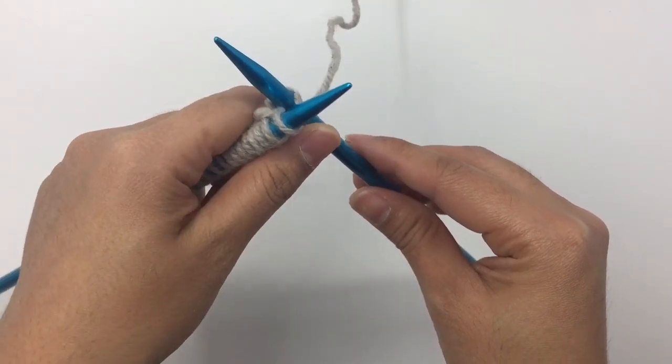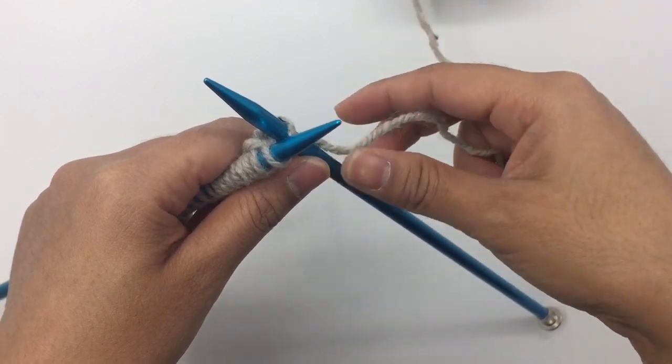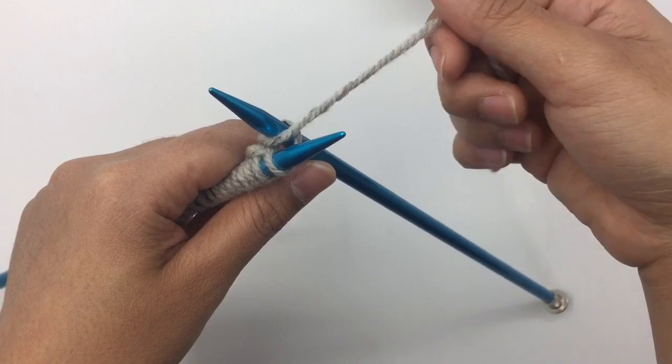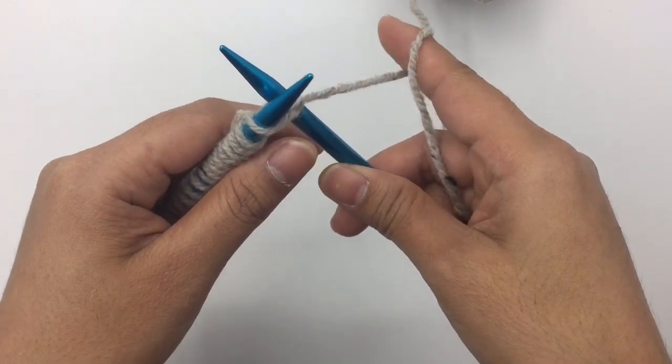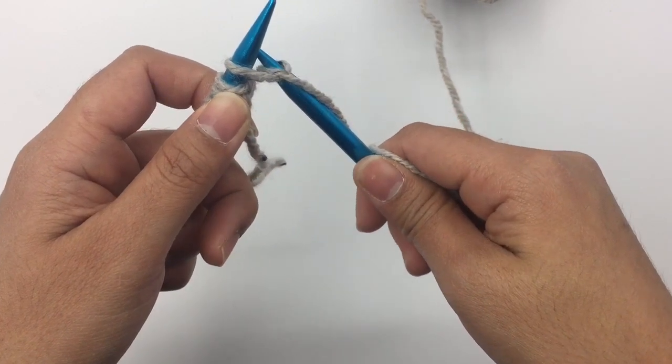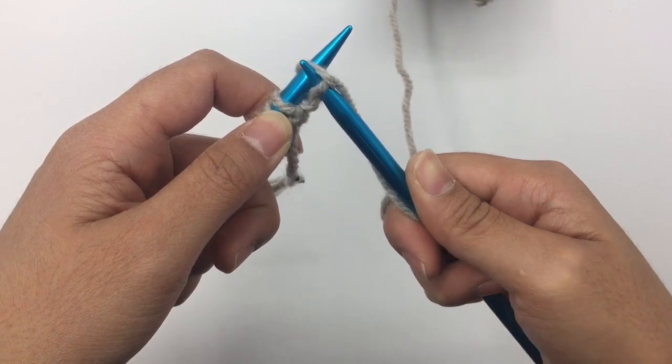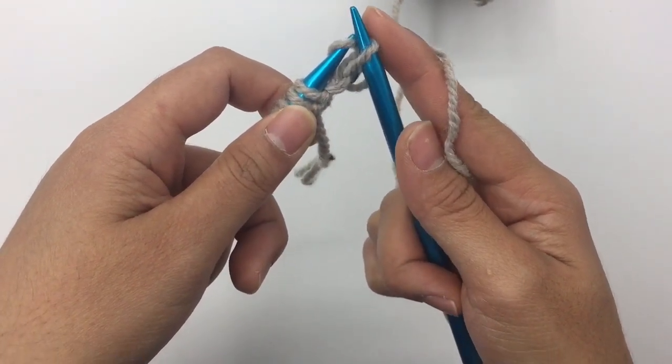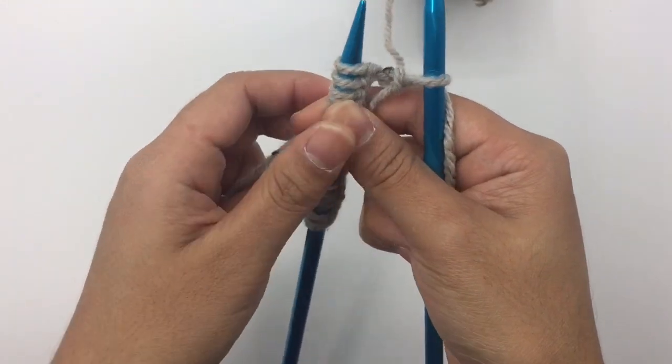Hold this right here and then grab your working yarn. Wrap it around the right needle like so, counterclockwise. Then bring that loop up into the first loop that we inserted the needle and drop the stitch off. The first stitch is kind of difficult.